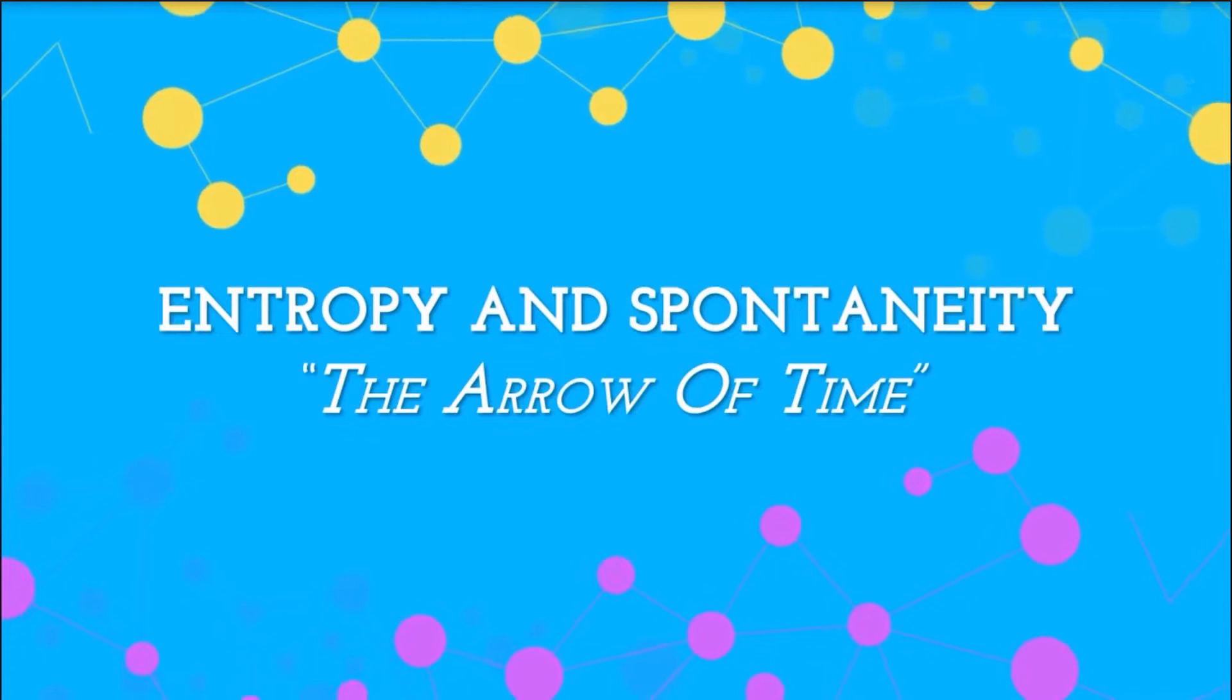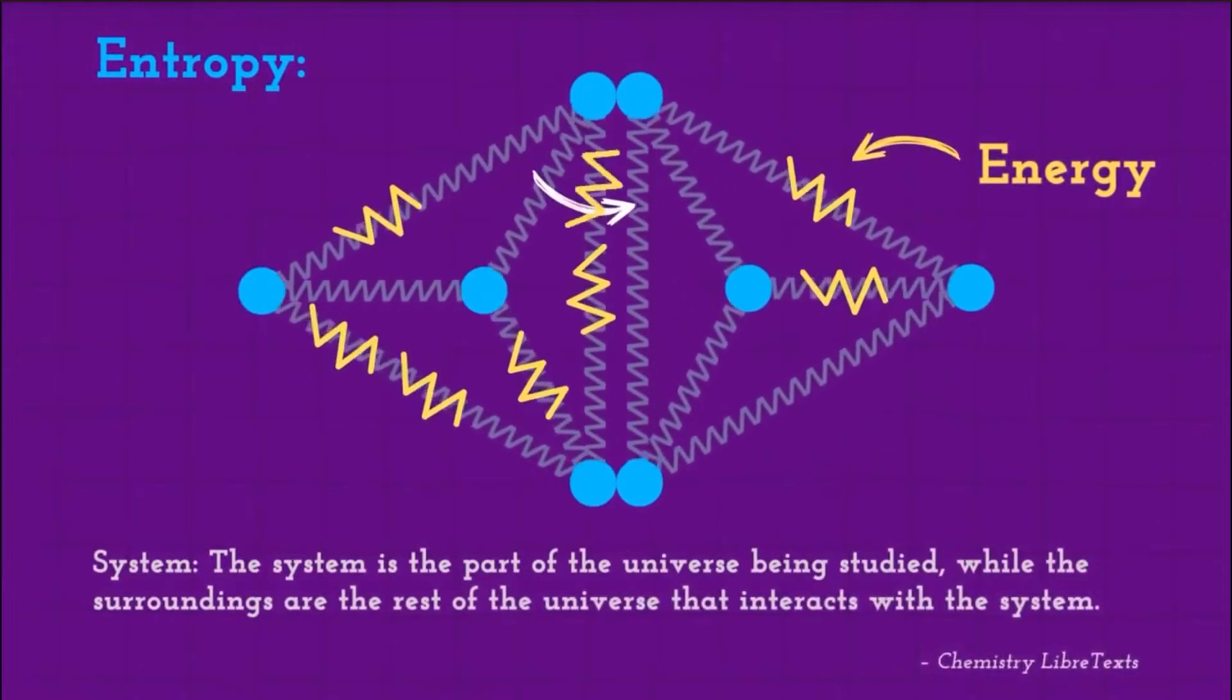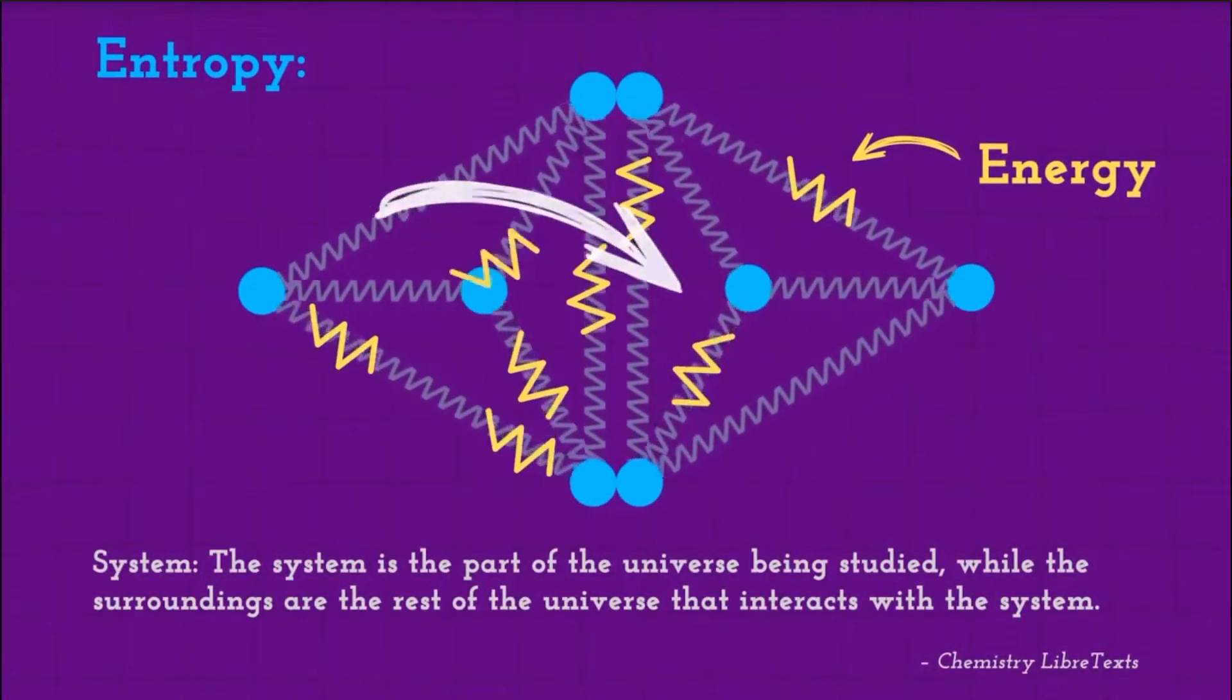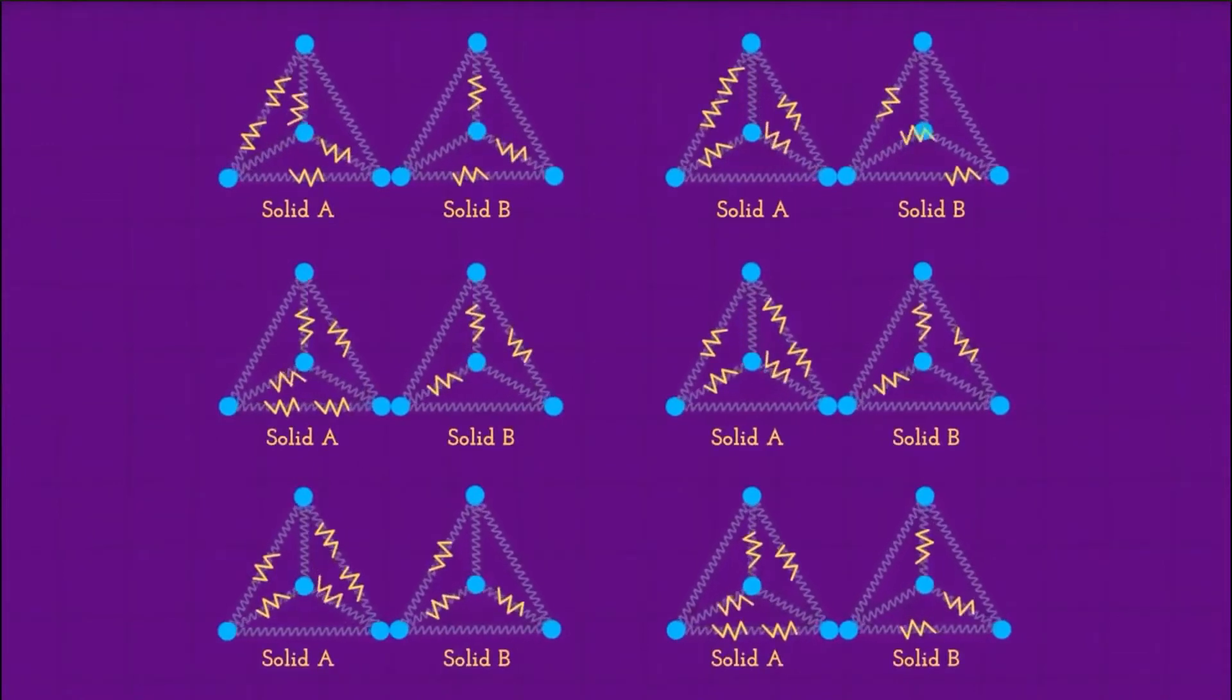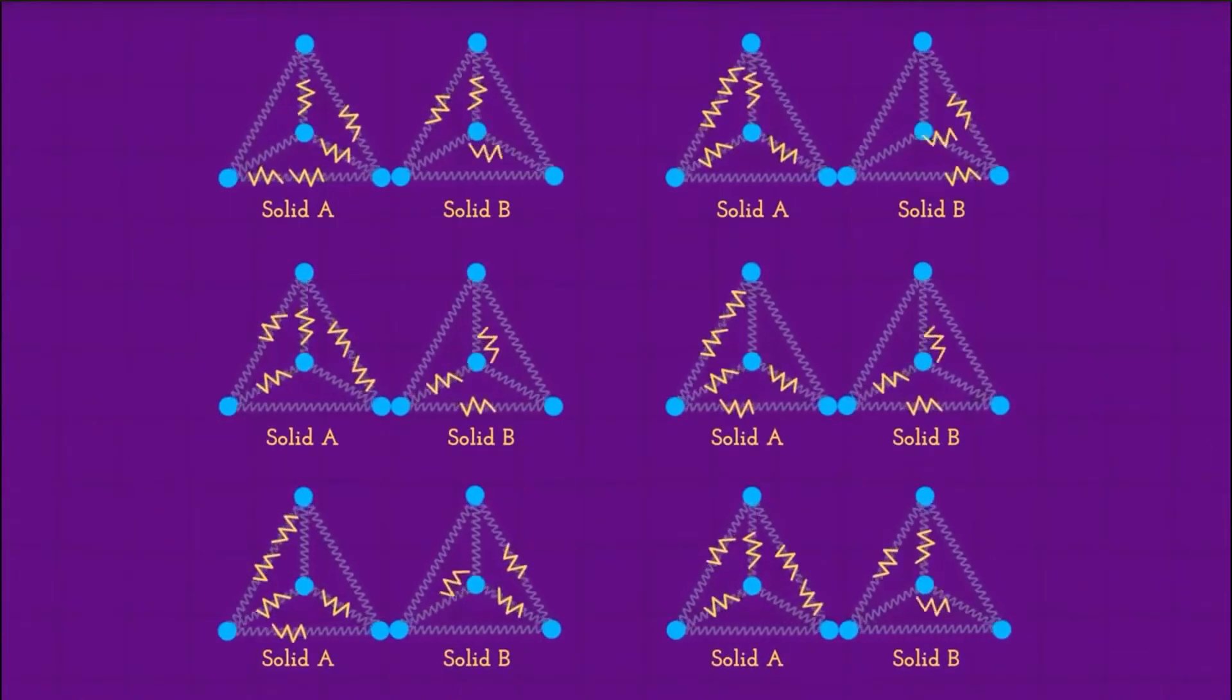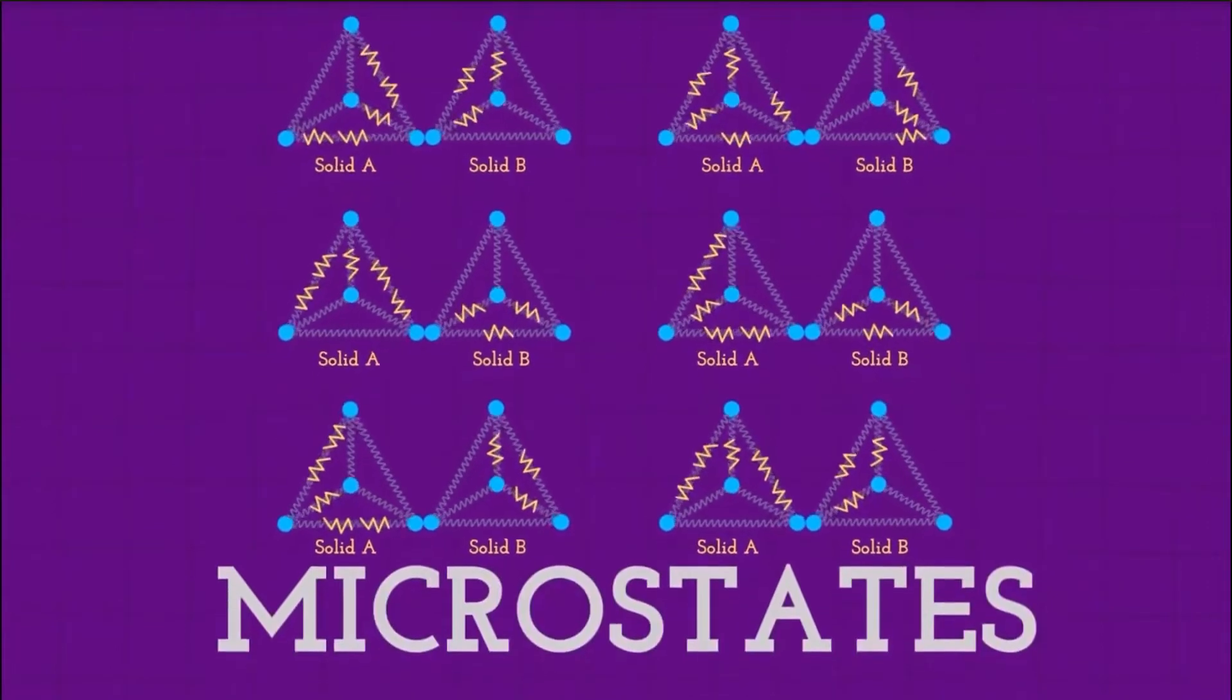Entropy is a measure of molecular randomness or disorder. Think of it like this. Entropy is the number of ways each energy configuration can be arranged within a system. There are many ways that energy can be distributed within a system and still have the same total energy. These different configurations are known as microstates.